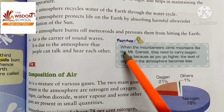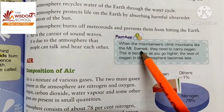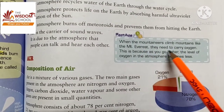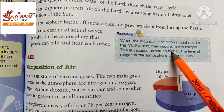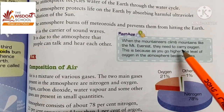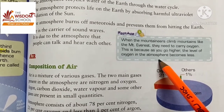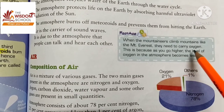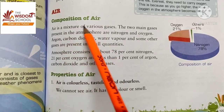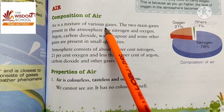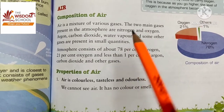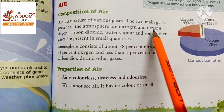When mountaineers climb mountains like Mount Everest, they need to carry oxygen. This is because as you go higher, the level of oxygen in the atmosphere becomes less. Now let us know more about the composition of air. Air is a mixture of various gases. The two main gases present in the atmosphere are nitrogen and oxygen.